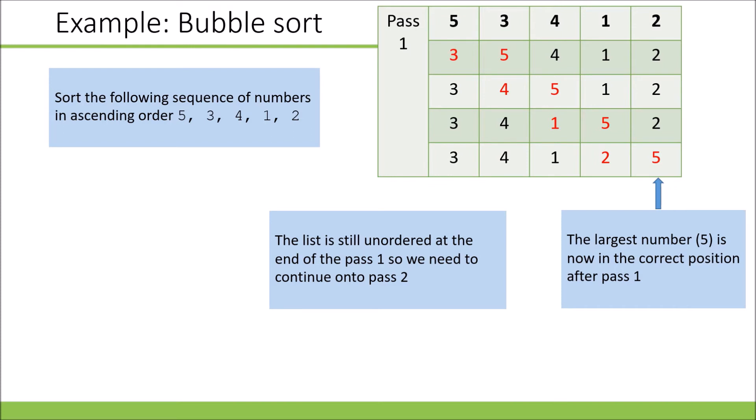Finally, on this pass, we compare two and five, and we need to swap those around. Now the five, the largest number, is in the correct position after the first pass.